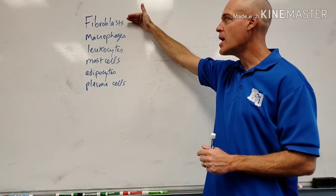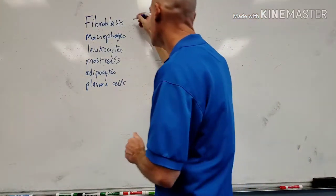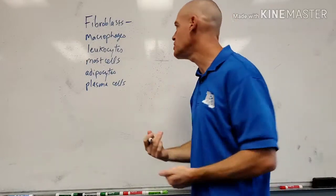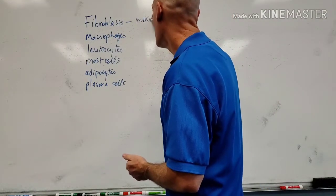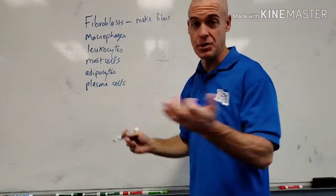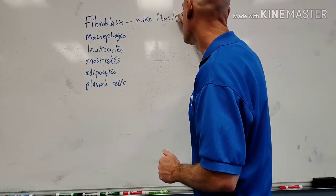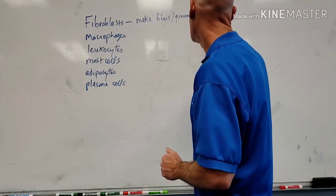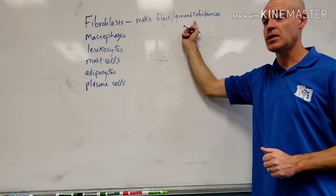The first cell type is the fibroblast. What do fibroblasts do? They basically make the fibers of the fibrous tissue and ground substance. So they make the fibers and the ground substance.